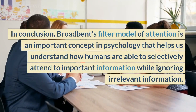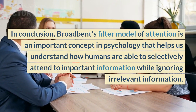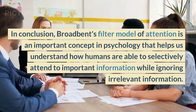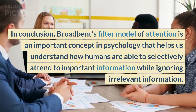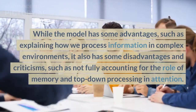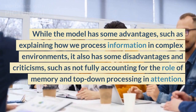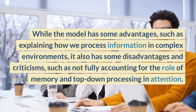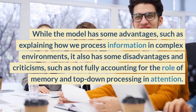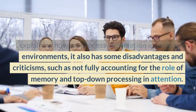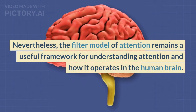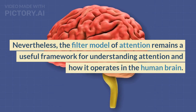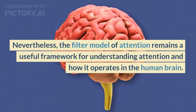In conclusion, Broadbent's filter model of attention is an important concept in psychology that helps us understand how humans are able to selectively attend to important information while ignoring irrelevant information. While the model has some advantages, such as explaining how we process information in complex environments, it also has disadvantages and criticisms, such as not fully accounting for the role of memory and top-down processing in attention. Nevertheless, the filter model remains a useful framework for understanding attention and how it operates in the human brain.